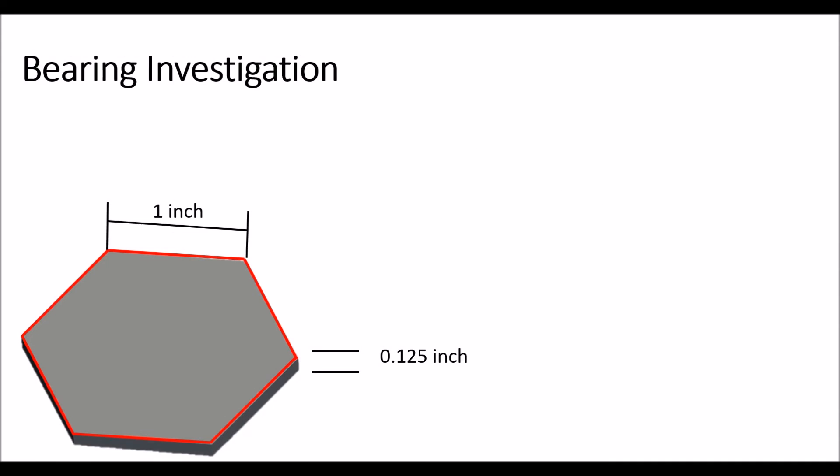The last thing we're going to look at is the bearing failure of the plate. Specifically we want to make sure it actually doesn't happen. We want to make sure that the plate is sheared to create the hexagonal piece and doesn't fail due to bearing before that happens.